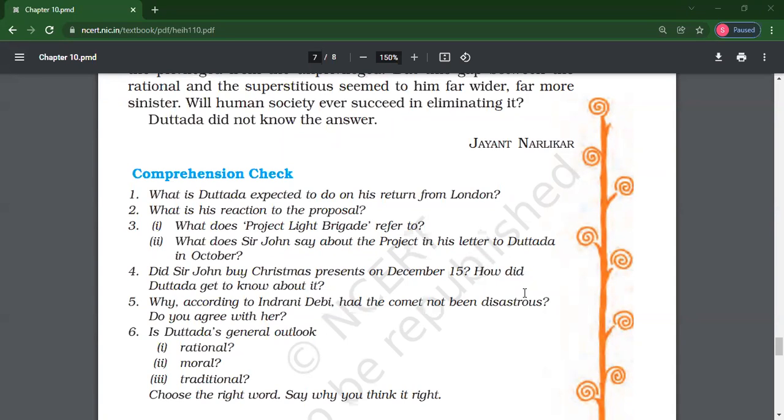Bani is saying yes, as he sent him the telex. Angel is saying Dattada got to know from the letter that Sir John had bought Christmas presents on December 15. It indicated that the project was successful. Instead of writing letter, write down telex. He got a telex and that time he came to know.